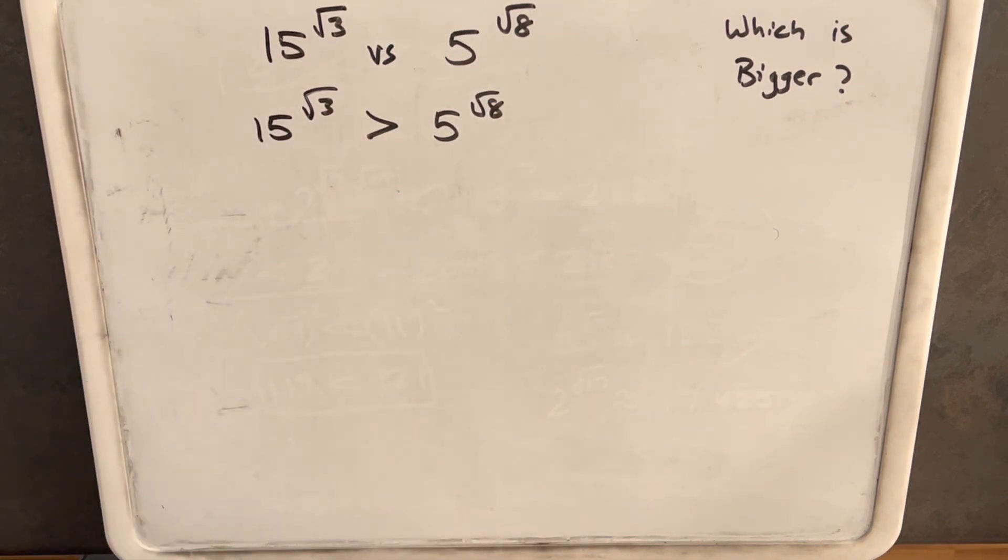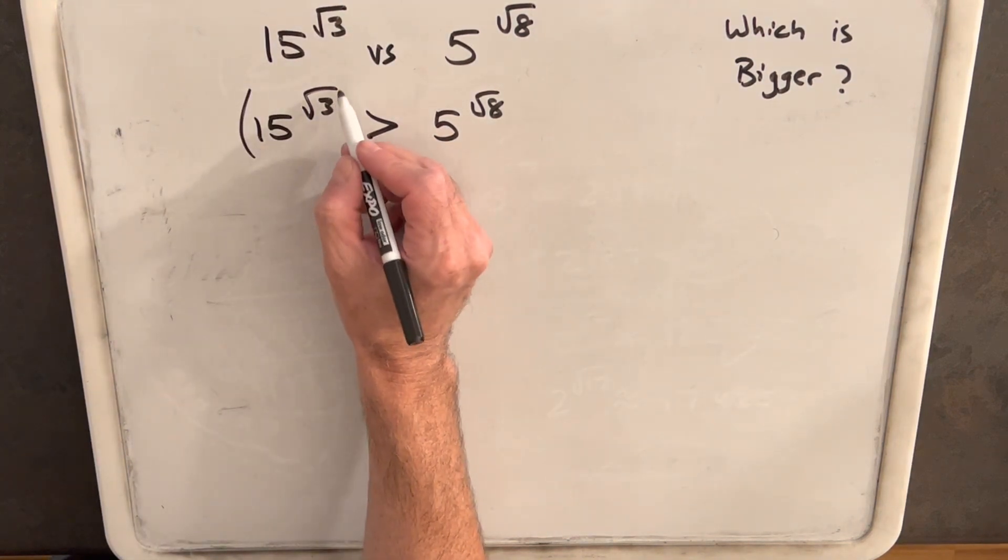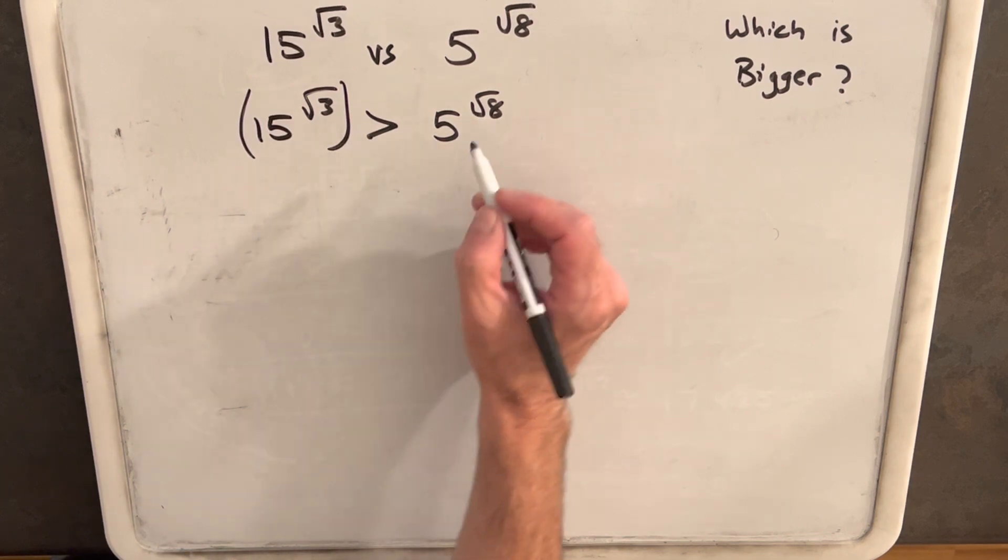And then what I'm going to do, the whole goal here is I want to get rid of these radicals in the exponents. So I like the idea of getting rid of this 3 first because that might simplify nicely.